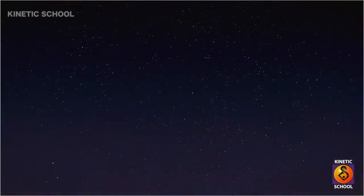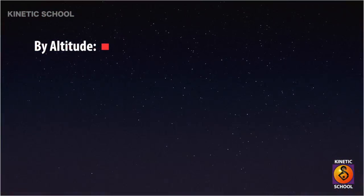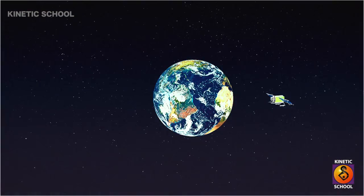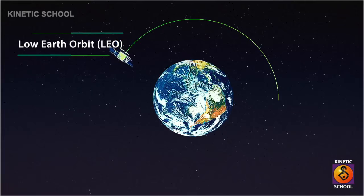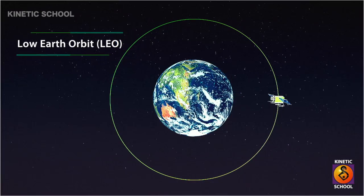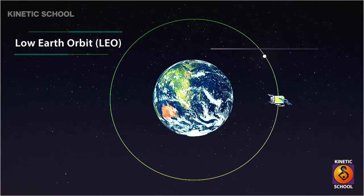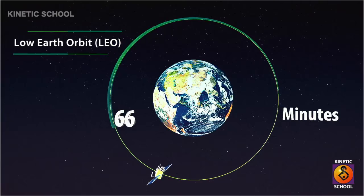On the basis of altitude from Earth, the types of orbits are classified into Low Earth Orbit, Medium Earth Orbit, and Geostationary Earth Orbit. In Low Earth Orbit, satellites operate at a distance of about 160 to 2,000 kilometers above the Earth's surface, and it takes approximately 90 to 120 minutes to circle the Earth.